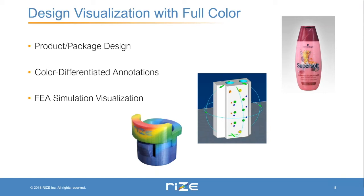A special case is being able to prototype parts in full color using our new X-RIZE technology. This has a few specific useful features for prototyping. One would be prototyping products and packages that require full color to achieve the full visual effect and make sure everything looks the way it was intended. Another useful feature is color-differentiated annotations.